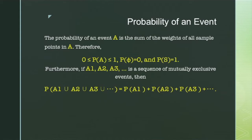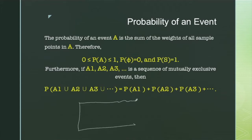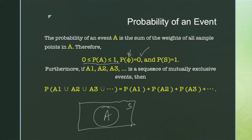The probability of an event A in a sample space S will be more than zero but less than one. The probability of a null event, which is not part of the sample space, is considered as zero. But the probability of occurrence of any event out of the sample space is one, because it is the summation of all possibilities.